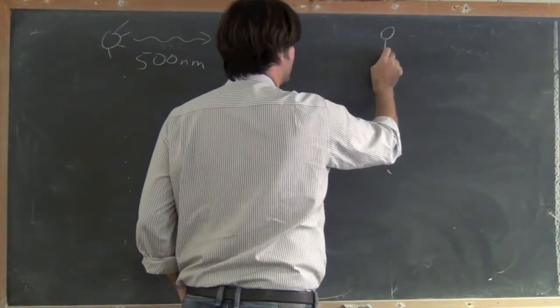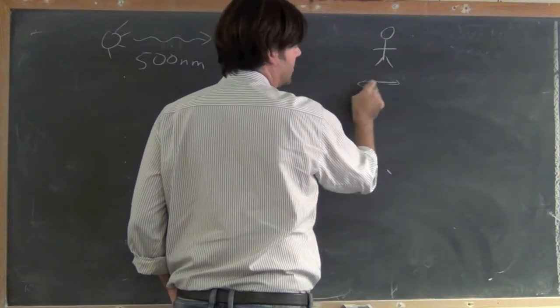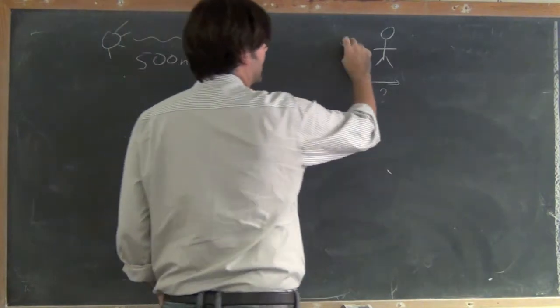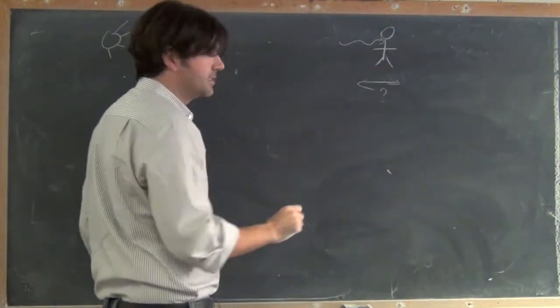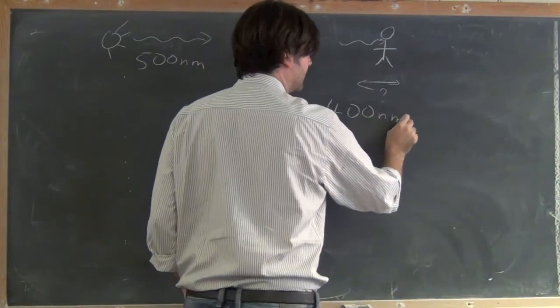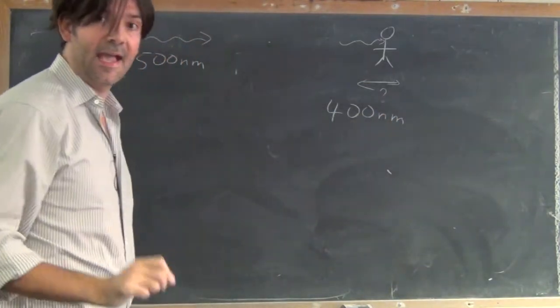But I am moving, or it's moving, but I don't know how much or how fast. But what I know is that when the light gets to me and I see it, I observe it with a wavelength of 400 nanometers. How fast am I moving?